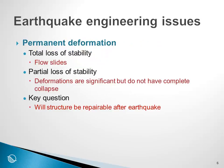Generally, we can categorize the permanent deformation into two groups. There is the obvious case where we have a total loss of stability and we have flow slides. These are obviously the catastrophic events and the intent and desire is to avoid this at all possible costs. But then there are the cases where we only have a partial loss of stability, where the deformations can be significant but are not sufficient to cause complete collapse of the structure.